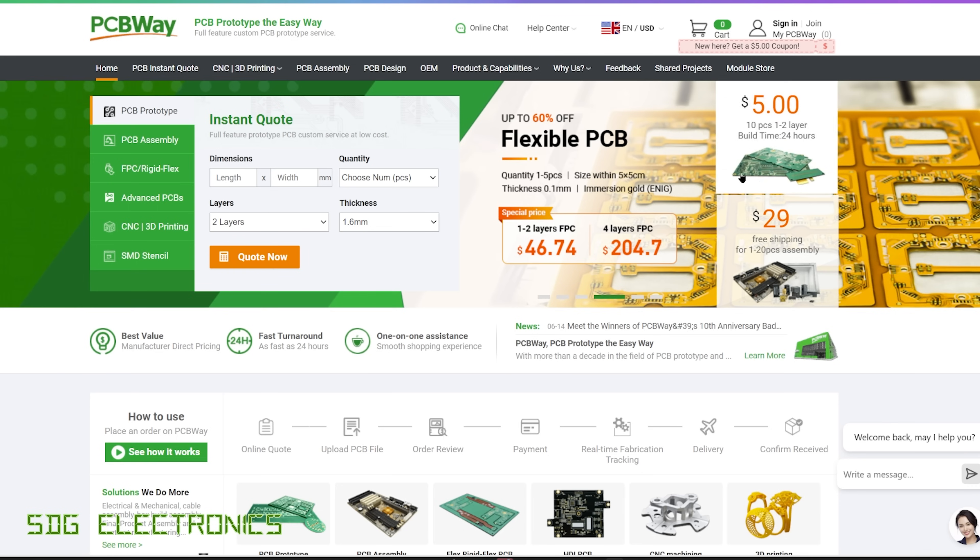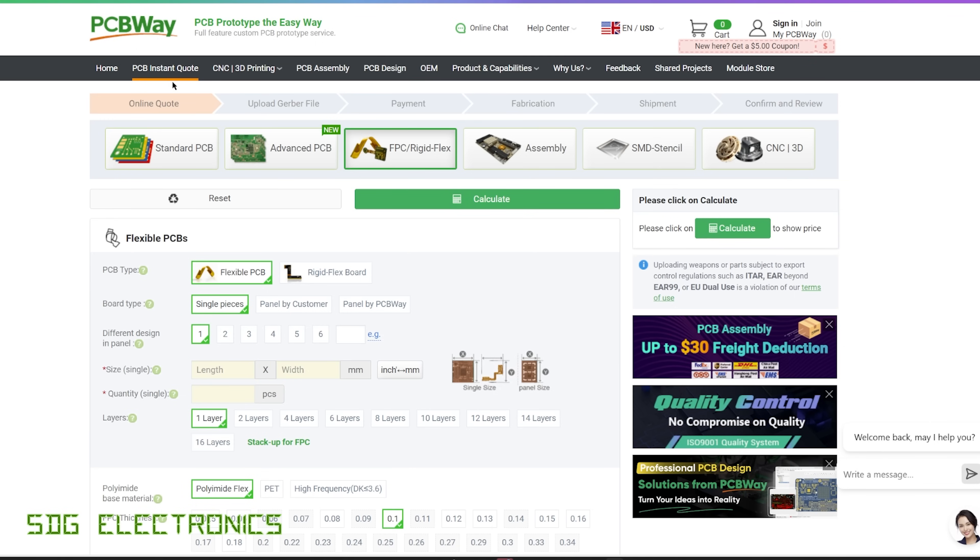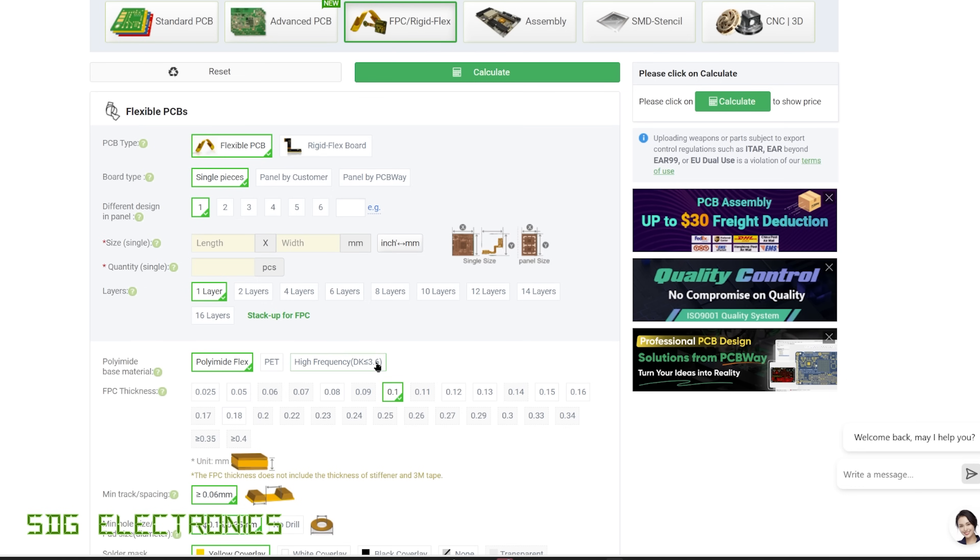And then they've also got an offer on flexible PCBs. So up to 60% off on one to two layers or four layer PCBs. And if you go to the PCB instant quote and select FPC or rigid flex, you can select from the various options on here.